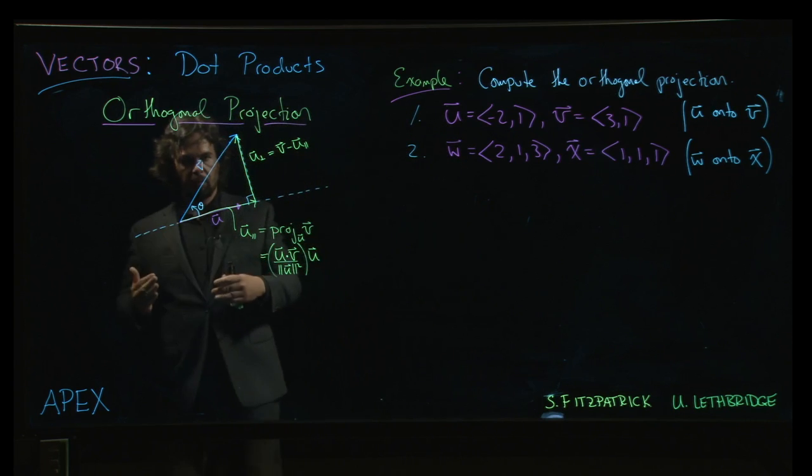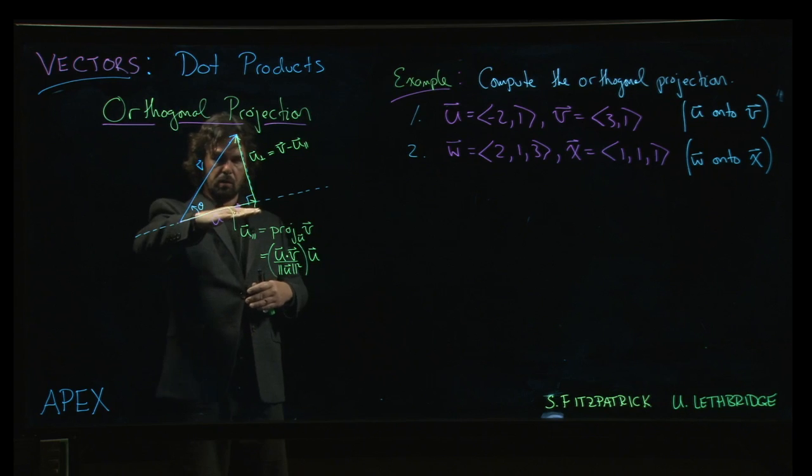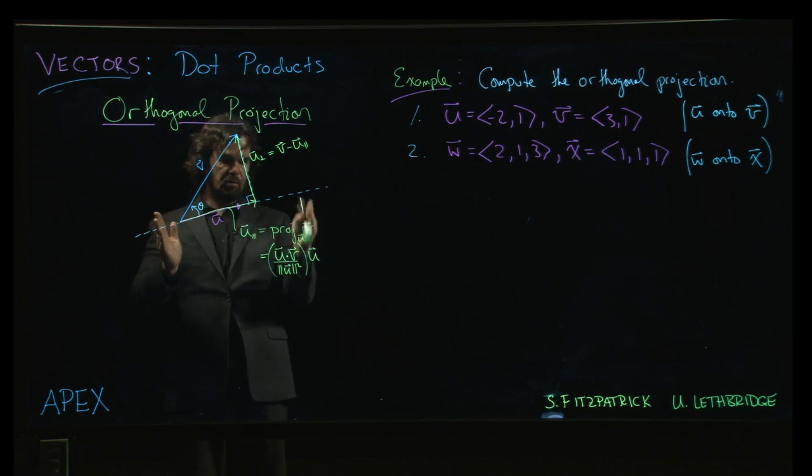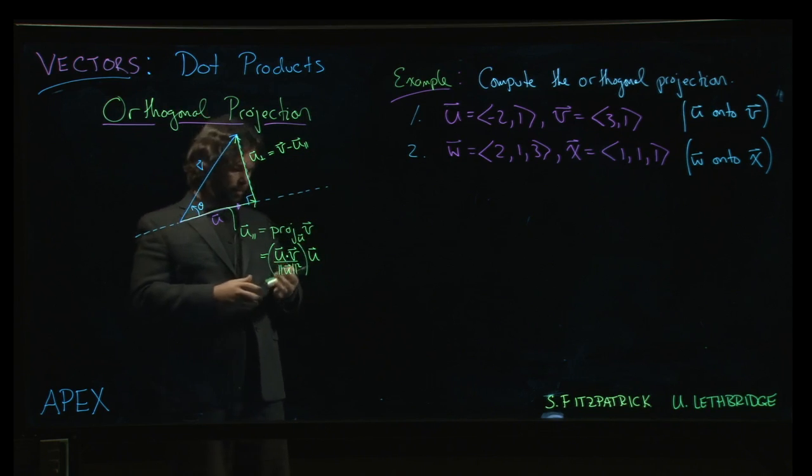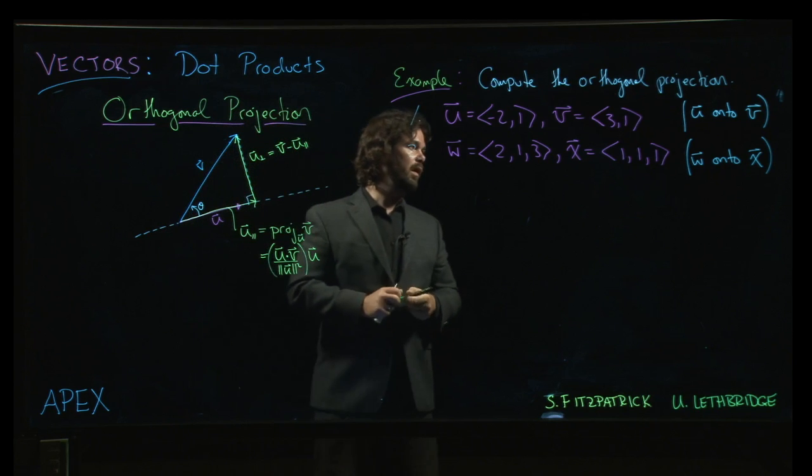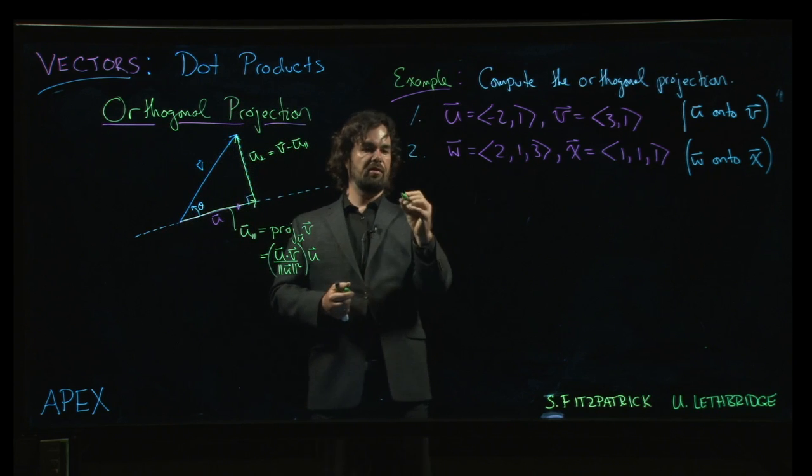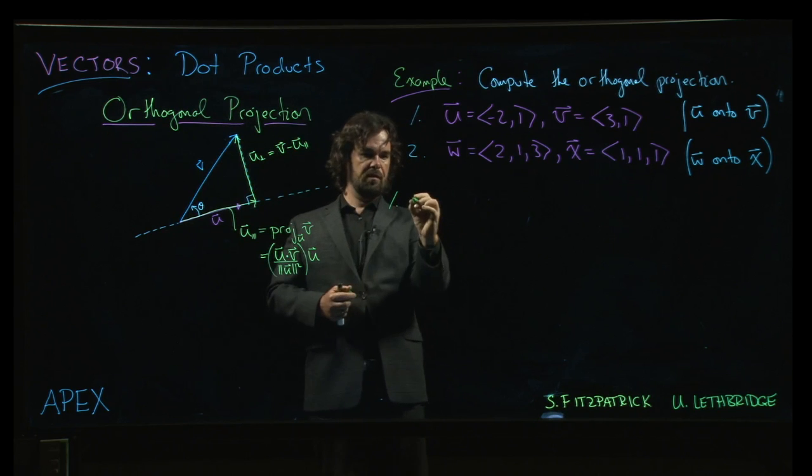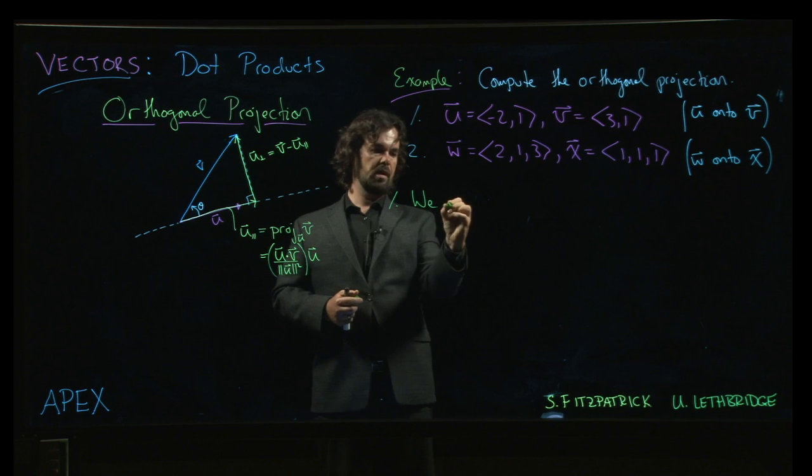Now that's the projection of v onto u, so you have to think it through. v is being projected onto u, which gives me a vector parallel to u. So it should be a scalar multiple of u. Now in the example, the first one asks for u onto v.